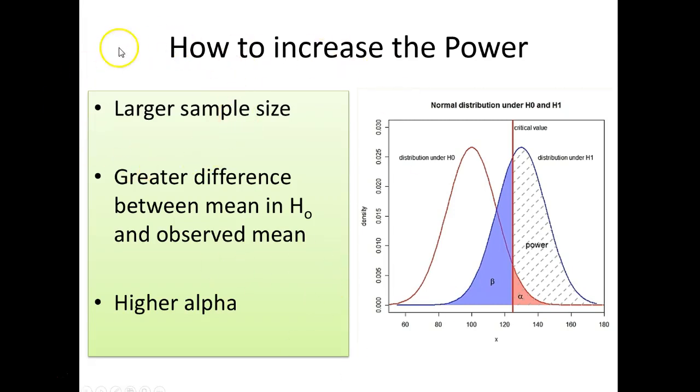And that is if you have a larger sample size. So the larger your sample size, the smaller beta will be.